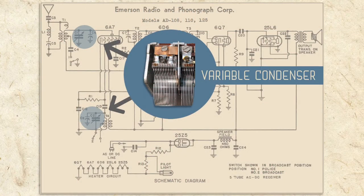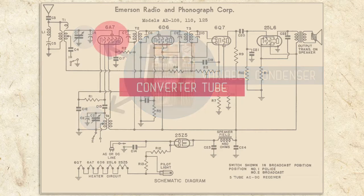After the variable condenser, the next stage in our superheterodyne circuit is the converter tube.